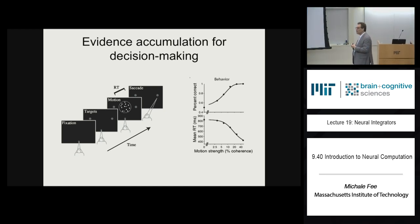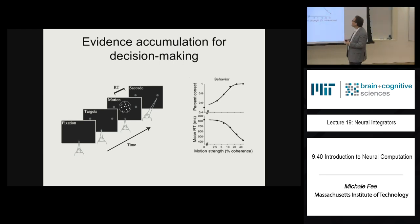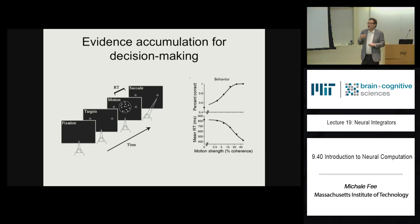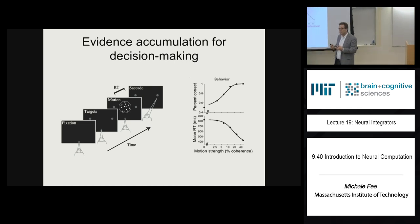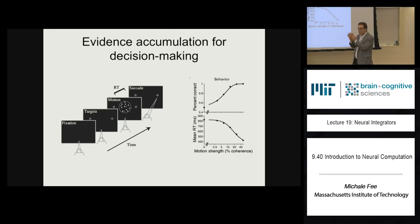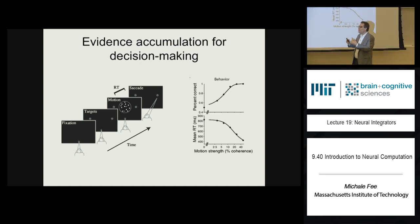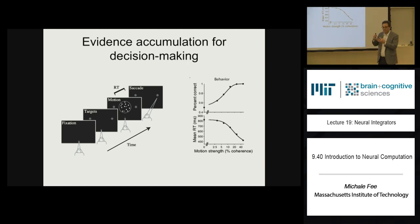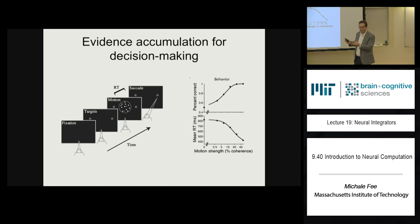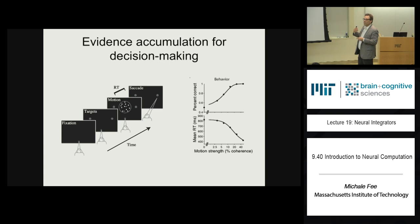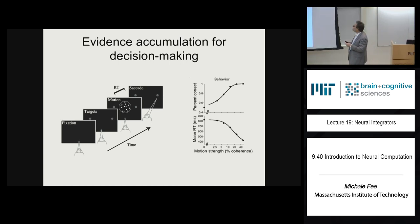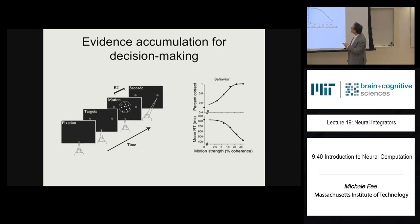Short-term memory and neural integrators are also thought to be involved in a different kind of behavior — accumulating information over time. Sometimes when you look at a stimulus, it can be very noisy, and if you look briefly it's hard to figure out what's going on. But if you stare at it for a while, you gradually get a better sense of the stimulus. There's a whole field of neuroscience that relates to this issue of accumulating evidence during decision making.